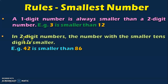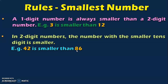The second rule is: in two-digit numbers, the number with the smaller tens digit is smaller. Suppose we have two numbers — 42 and 86. First, look at the tens place. In the tens place, you have 8 for 86 and 4 for 42. Which is smaller? 4 is smaller than 8. So with that, we decide that 42 is smaller than 86. The rule is: look at the tens place and whichever digit is smaller, that number is the smaller number.